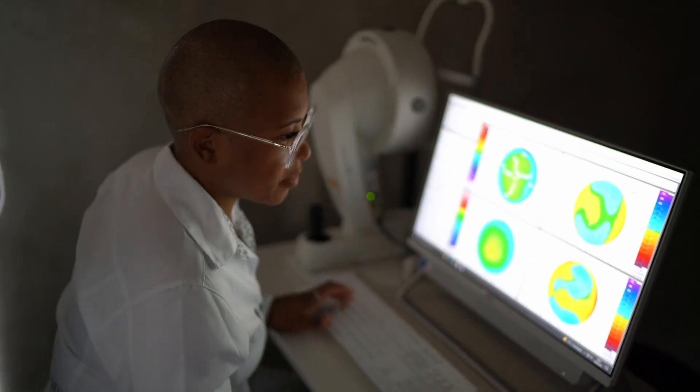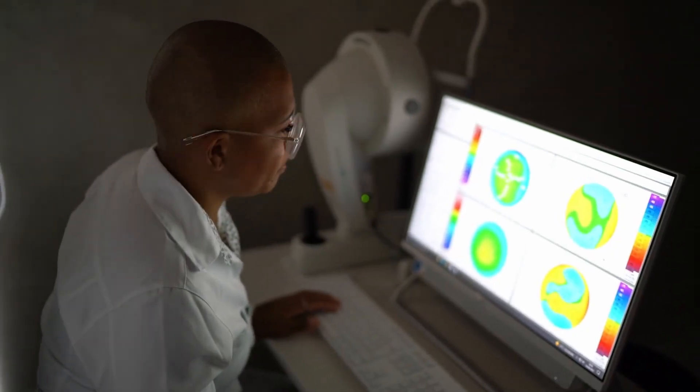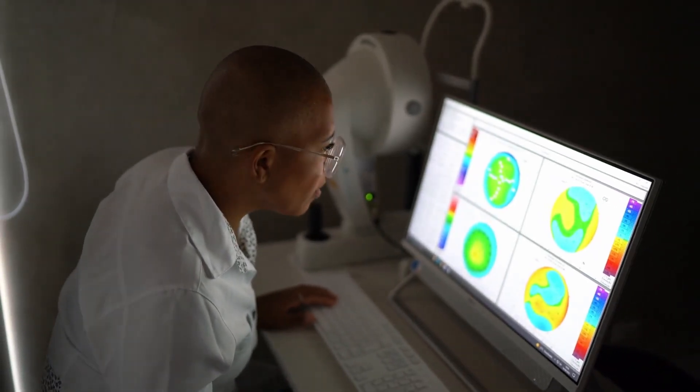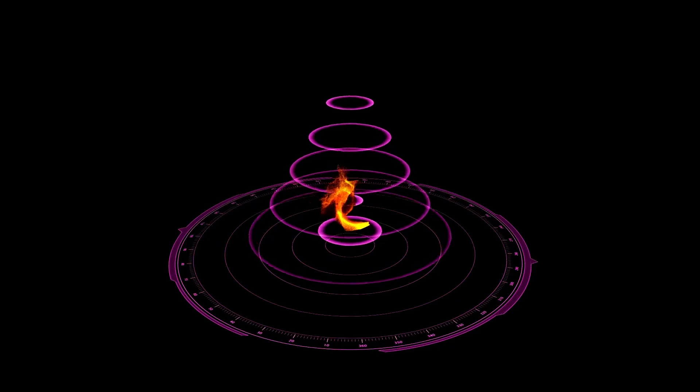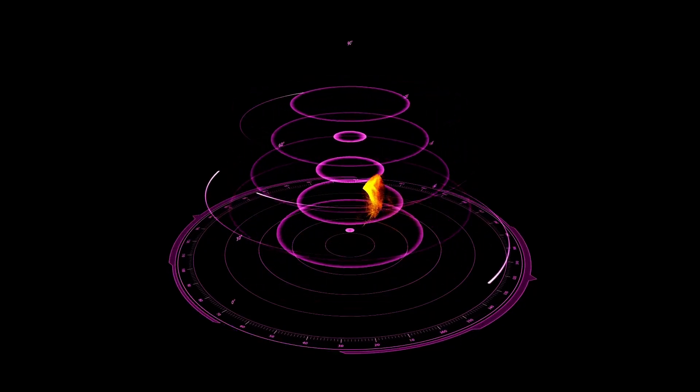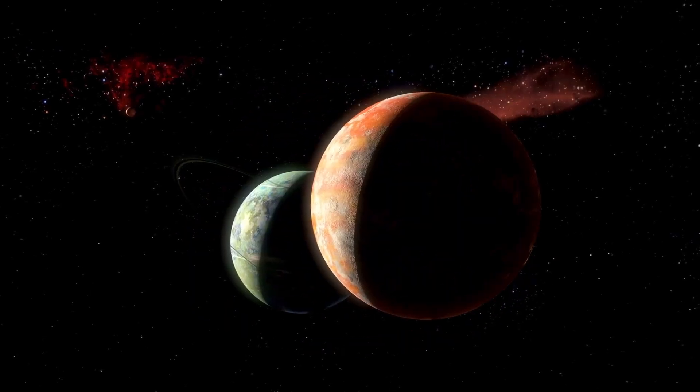This is what scientists call the cosmic dark ages. There were no stars, no galaxies, just vast, silent clouds of hydrogen gas. This wasn't an empty universe. It was one full of thick, light-absorbing fog.